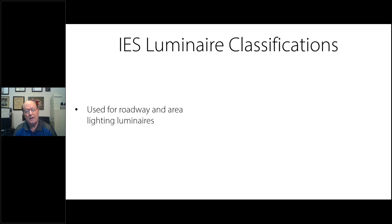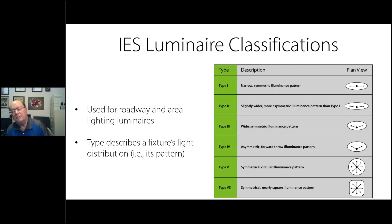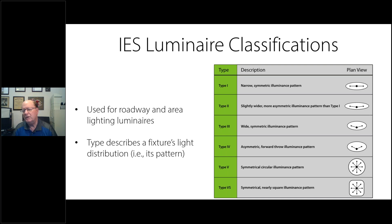The IES luminaire classifications are for both roadway and area lighting, divided into types using Roman numerals — Types 1, 2, 3, 4, 5, and 5S (S for square). The type describes a fixture's light distribution pattern. Type 1 is very narrow, used in Europe for trolley tracks. Type 2 is wider. Type 3 is very common — over 50% of area lighting on poles sold in distributor stock is Type 3 because it works for roadways and many parking areas. Type 4 sends light more forward. Type 5 is a symmetrical circle, and 5S is a symmetrical square.